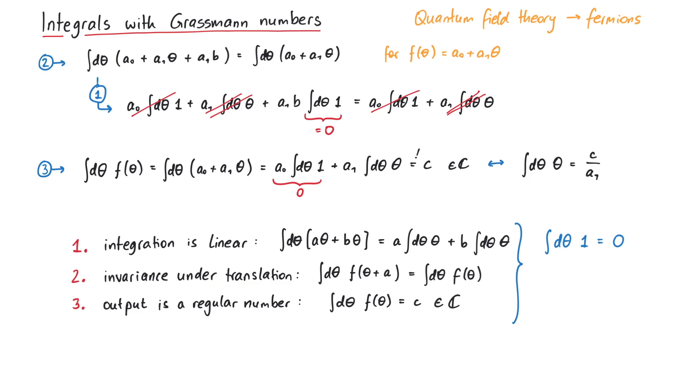This c is now usually defined to be equal to a1, which is like a normalization condition for Grassmann integrals, such that the integral over theta is 1.